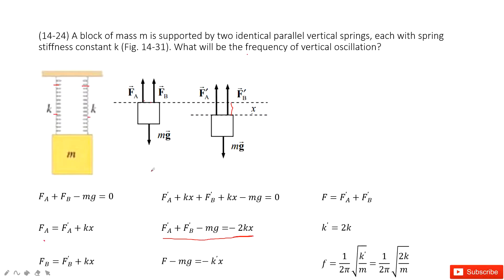For simple harmonic oscillations, our function usually looks like this. We can use F to replace F_A plus F_B on this side.